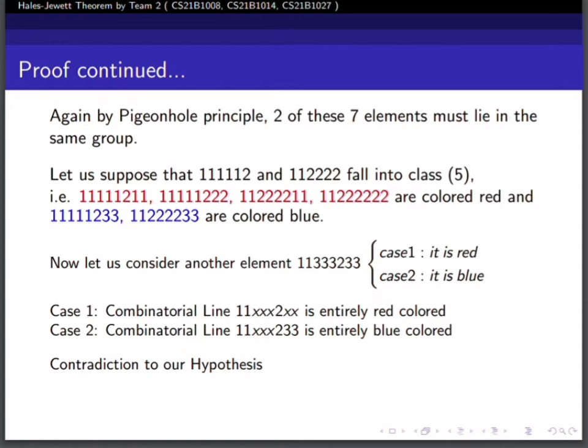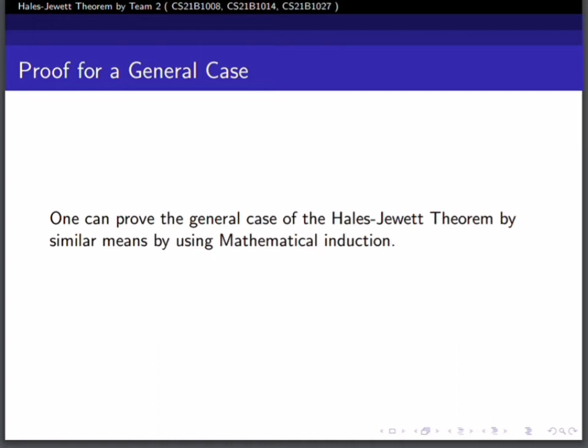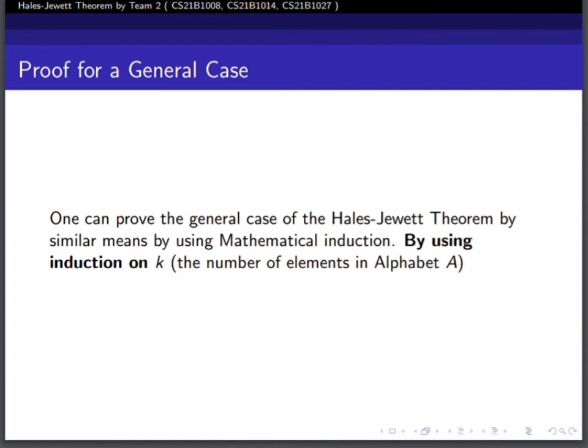If we color it blue, then the combinatorial line 1 1 star star star 2 3 3 is entirely blue, thus contradicting our assumption. Similarly for any pair, the same could be proven. Hence our assumption is wrong and there does not exist a coloring to avoid getting a monochromatic combinatorial line. The general case can be proven by mathematical induction on k.